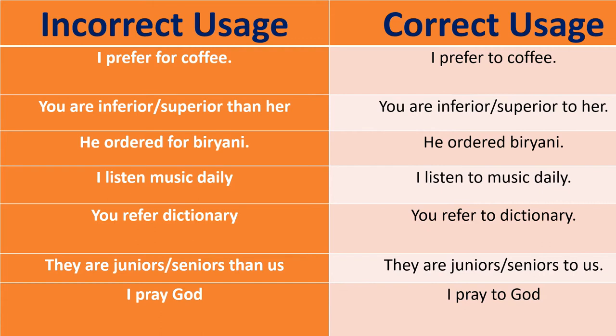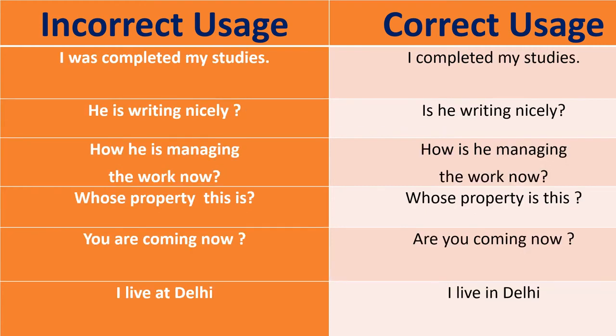'I prefer for coffee' — correct: 'I prefer coffee.' 'You are inferior or superior than her' — correct: 'you are inferior or superior to her.' 'I listen music daily' — correct: 'I listen to music daily.' 'You refer dictionary' — correct: 'you refer to dictionary.' 'They are juniors or seniors than us' — correct: 'they are juniors or seniors to us.'